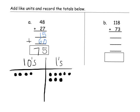And twenty-seven is modeled with two tens and seven ones. We can show students that when we add eight ones plus seven ones, that gives us fifteen ones.